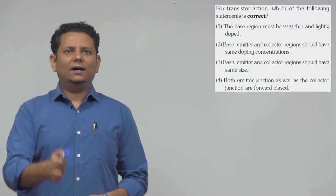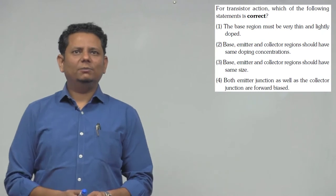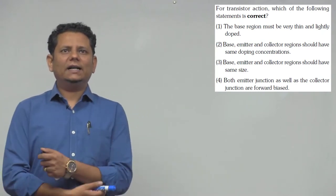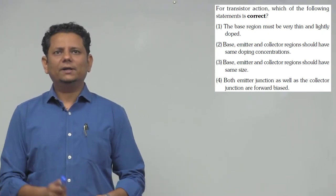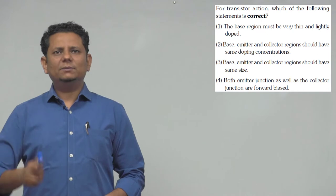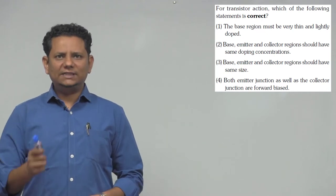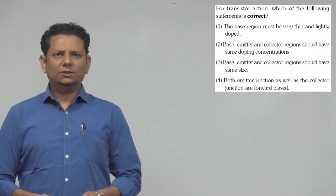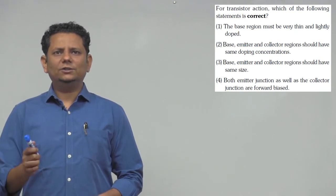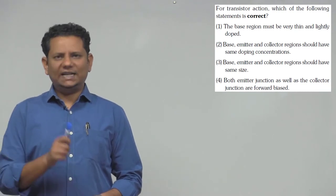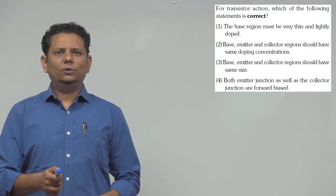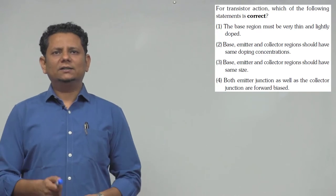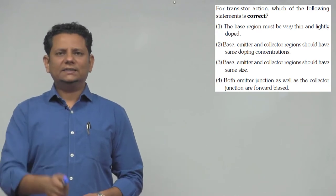The question asks: for transistor action, which of the following statements is correct? Option A: the base region must be very thin and lightly doped. Option B: the base, emitter, and collector regions should have the same doping concentration. Option C: the base, emitter, and collector regions should have the same size. Option D: both the emitter junction and the collector junction are forward biased.